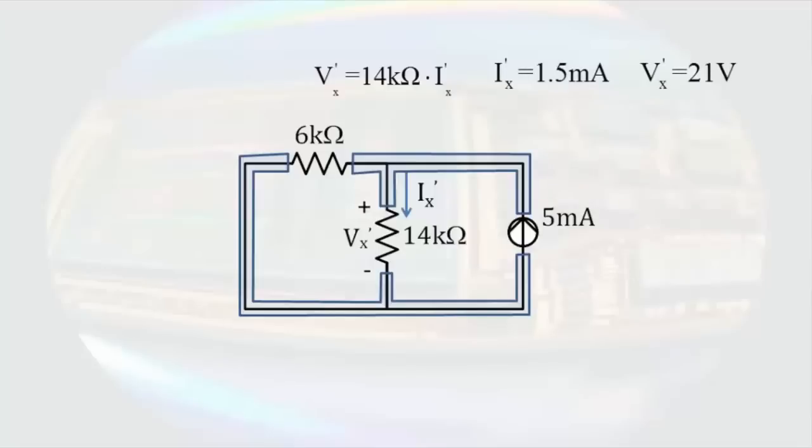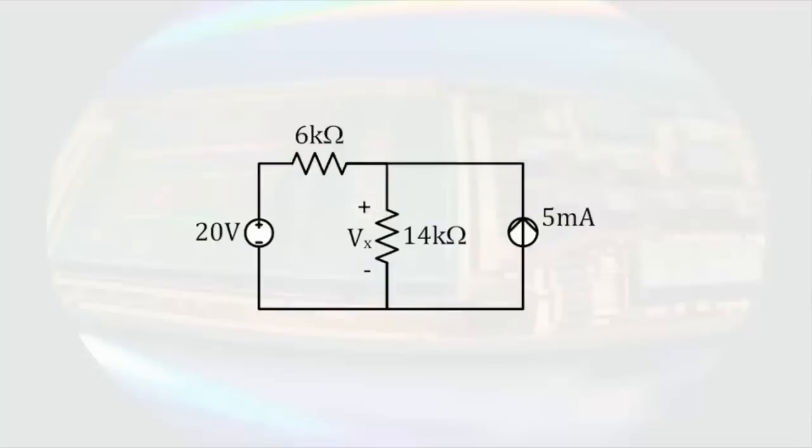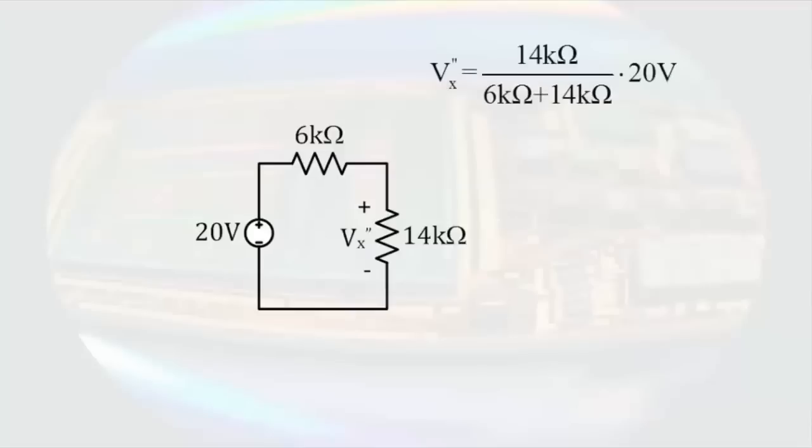Going back to the original circuit, let's now look at the contribution to Vx from the 20-volt source. To do that, we need to turn off the 5 milliamp source. Turning off the current source results in no current through the branch that contained the source. This is the same as replacing that source with an open circuit. Let's call the voltage from this portion of the circuit Vx double prime so that we don't confuse it with the other variables. We can solve for Vx double prime by doing voltage division. This results in Vx double prime equals 14 volts.